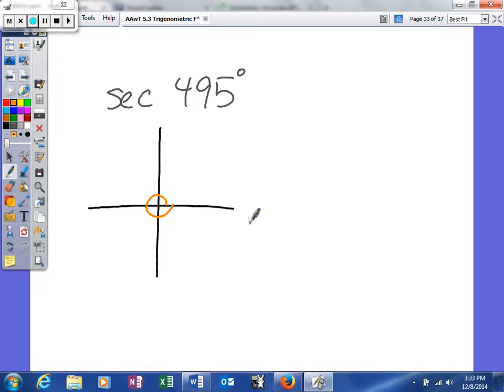Here to here, that's 360. So what we're going to do is figure out how many degrees we have left. So 135 degrees is what we have left. So from here to here, that's 90. So I need to go another 45 degrees.